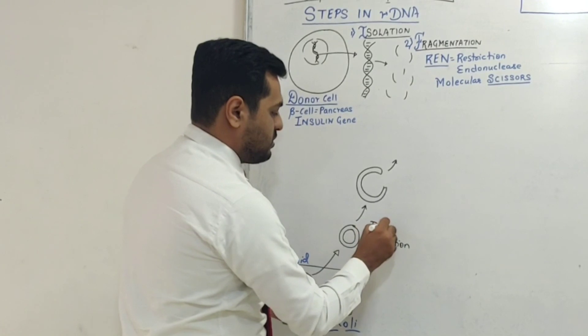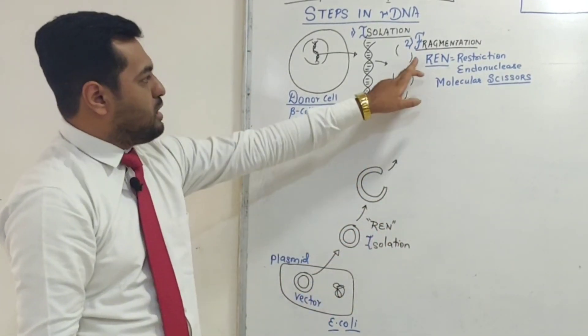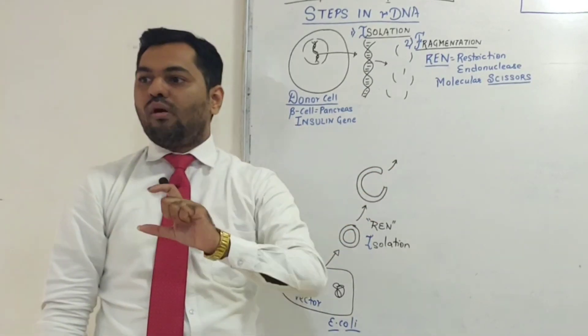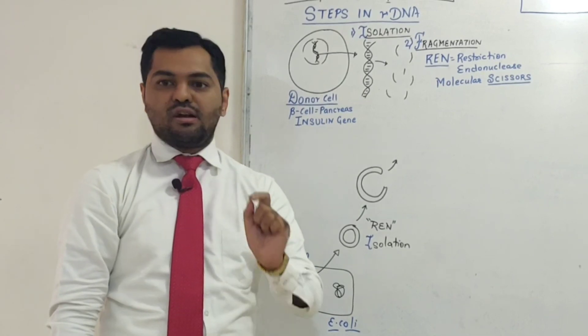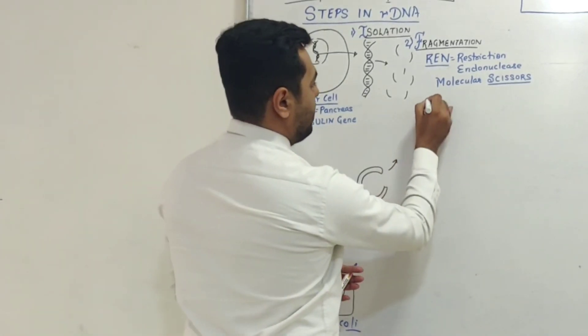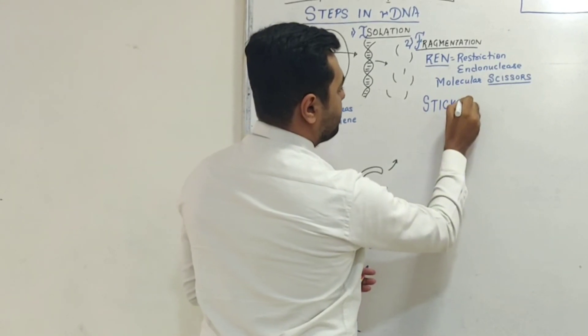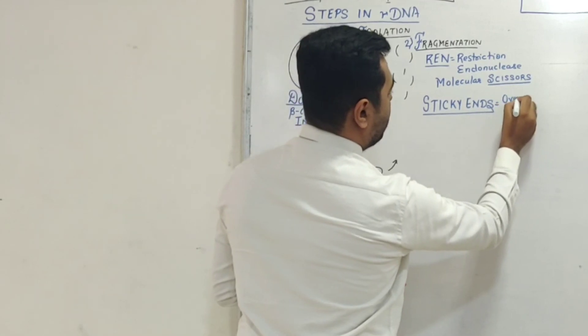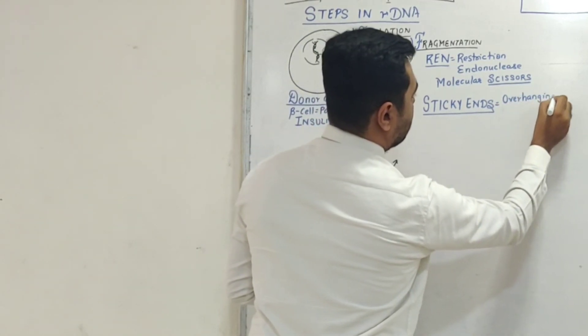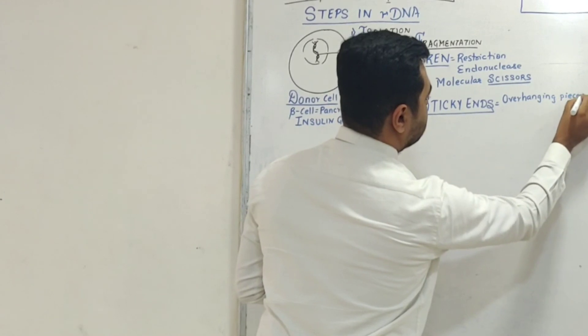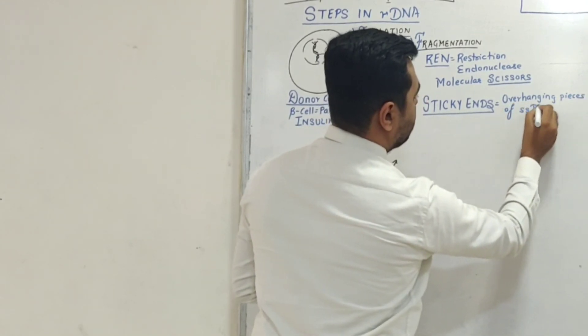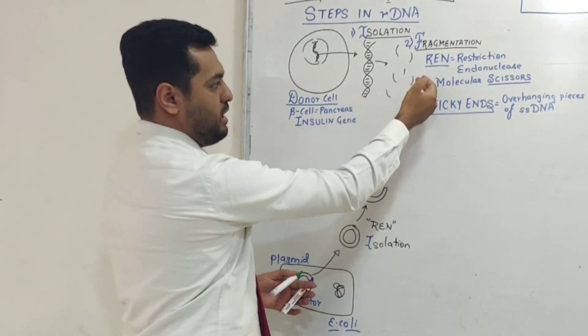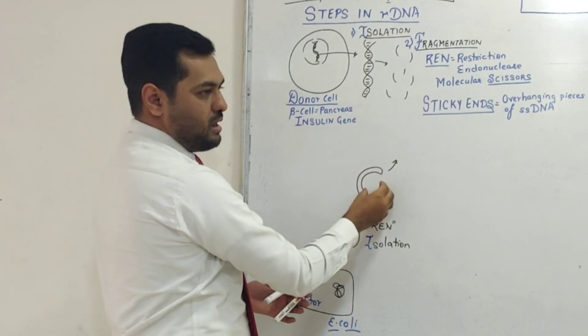When restriction endonuclease enzyme cuts the donor DNA segments and the plasmid, both form single-stranded overhanging pieces. We call these single-stranded overhanging pieces sticky ends. These overhanging pieces are of single-stranded DNA, and both the sticky ends of the donor DNA fragment and plasmid are going to be complementary to each other, so they can bind.